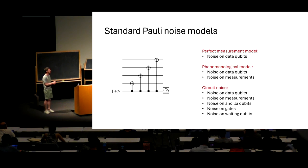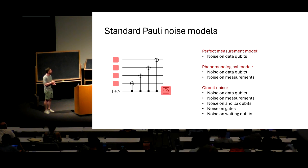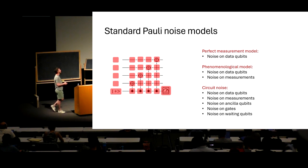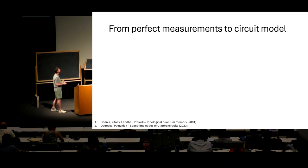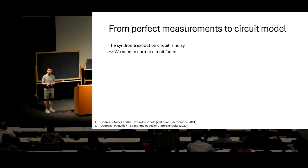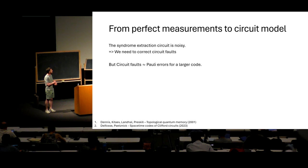We saw there are three noise models: perfect measurement (only input qubits are noisy), noise on input qubits and measurement outcomes, and noise on every gate. We should use the noise-everywhere model. But for the definition of decoders I used perfect measurement — there is a reason. We can basically reduce the problem of correcting faults to correcting a perfect-measurement circuit. Faults in a circuit typically behave like Pauli errors: they are equivalent to Pauli errors in a larger code. We see this with surface codes, where faults in the 2D surface code correspond to Pauli errors in a 3D surface code.